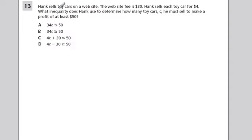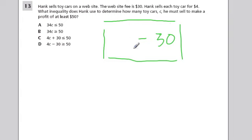Here we have Hank selling toy cars on a website. The website fee is $30, so from his perspective he's going to lose $30 just by setting up the website. He sells each toy car for $4. What inequality does Hank use to determine how many toy cars c he must sell to make a profit of at least $500? I'm going to write this like a little box right here. Whatever equation we're going to use to figure out how much money he's making, he's got to make a profit of at least $50, so it could be $50, $51, so it could be greater than or equal to $50.